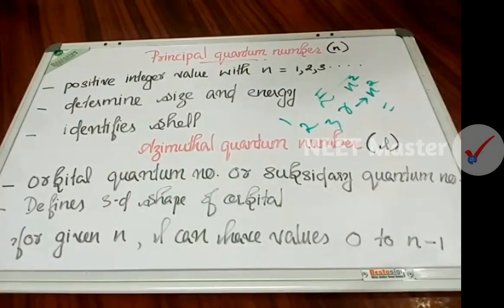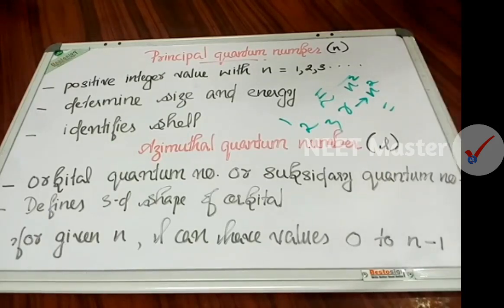That positive integer value is 1, 2, 3. That is the threshold. This principal quantum number determines the size and energy of the orbital.